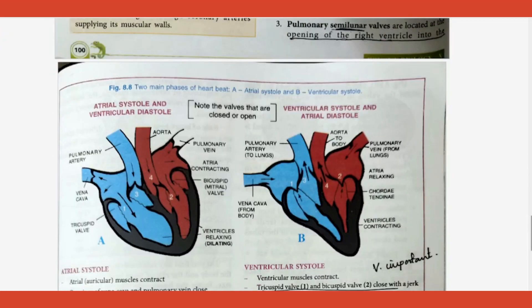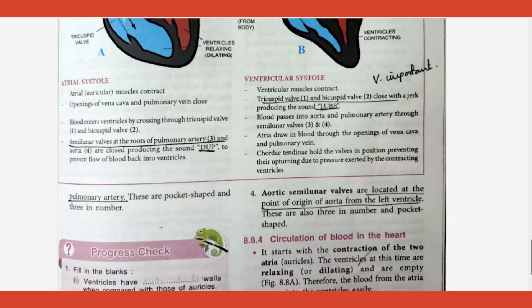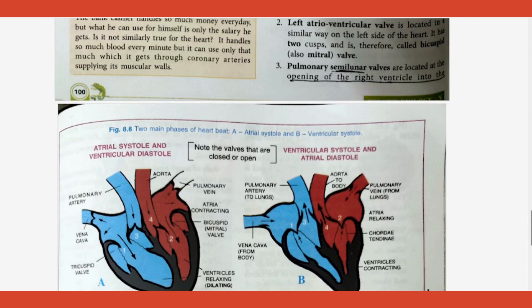One more concept is diastole. Blood moves when the atria are contracting — contraction is called systole. Once contracted, blood reaches the ventricle, and then the ventricle undergoes contraction — called ventricular systole; the atrial contraction is called atrial systole. Once systole is over, whichever part contracted goes into relaxation — that relaxation is called diastole. When the atria are contracting, the ventricles are relaxing, and vice versa.